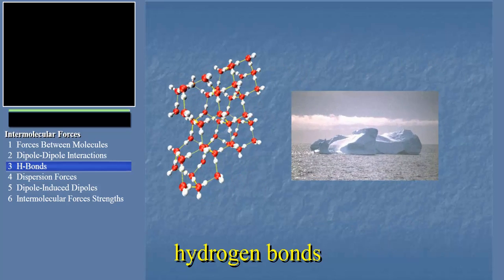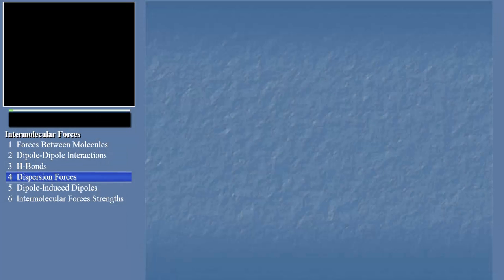Hence, ice floats. Hydrogen bonds are the strongest intermolecular forces, at least among neutral molecules. Let's now look at the weakest.